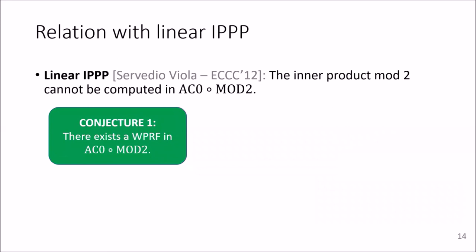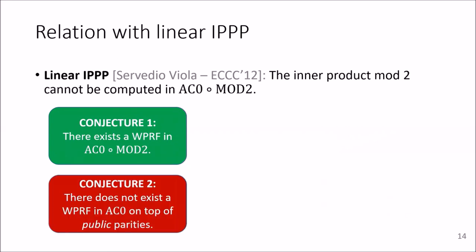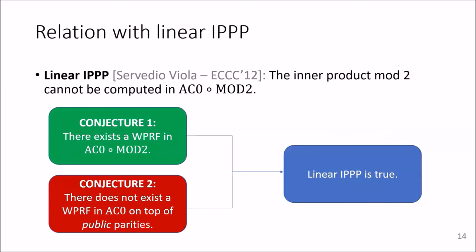Namely, if there exists a weak PRF on top of parities, but there does not exist a weak PRF on top of public parities, then we show that linear IPPP must indeed be true.